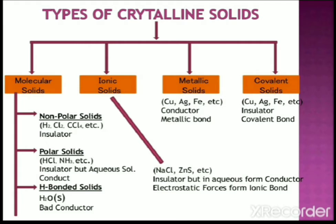In covalent solids, a wide variety of crystalline solids of non-metals result from the formation of covalent bonds between adjacent atoms throughout the entire crystal. They are also called network solids or giant molecules. Covalent bonds are strong and directional in nature, so atoms are held very strongly at their positions. Examples of covalent or network solids include diamond, graphite, and polymers — which are network structures made up of covalent bonds.